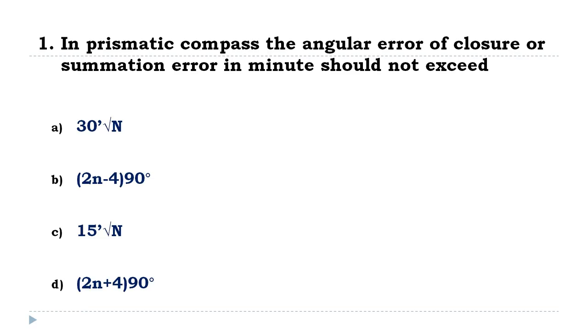First question: In prismatic compass, the angular error of closure or summation error in minutes should not exceed 15 minute root n.